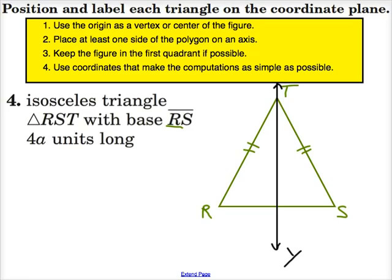Next, it says place at least one side of the polygon on an axis. Well, we've already placed the y-axis through the center line of the triangle. That suggestion says to keep that other axis. If we've got this horizontal axis, we should line that up on one of the sides. So we could set that as the x-axis here.